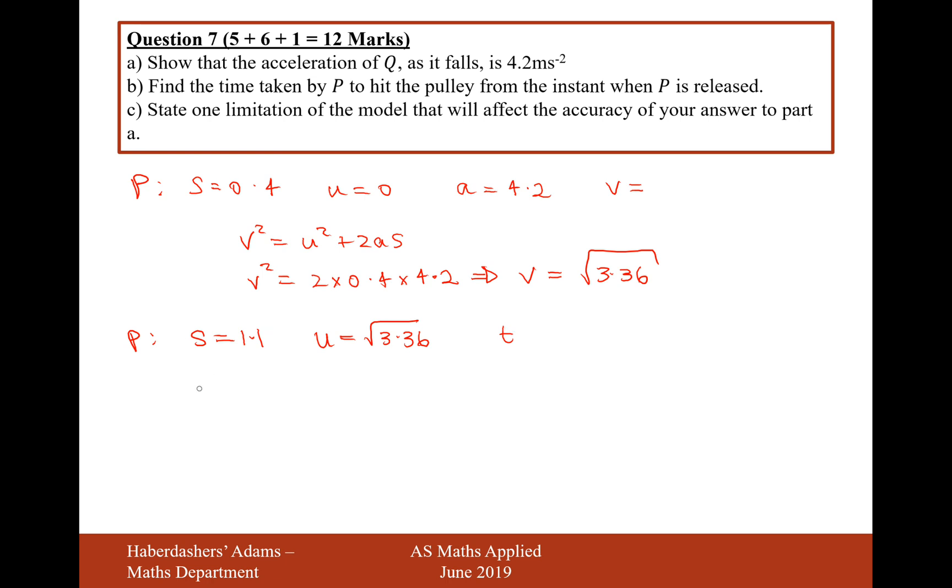So the next section is 1.1 more metres to travel with a constant speed of the square root of 3.36, and we want to work out the time. Now actually, probably not SUVAT here, but more like distance equals speed times time, because the speed is constant here. So it's 1.1 equals the square root of 3.36 times T. So divide by the square root of 3.36 and we're going to get 1.1 divided by the square root of 3.36, and that gives us 0.6 basically with a lot of zeros after it. So that's our value for T here.